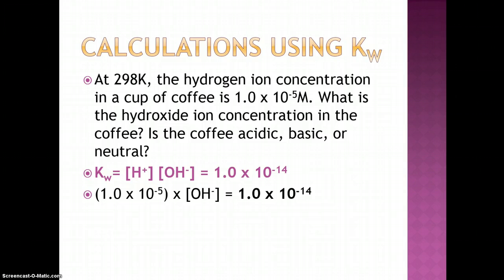...we divide both sides of the equation by 1.0 times 10 to the negative 5th and are able to calculate that hydroxide ion concentration is 1.0 times 10 to the negative 9th molar. Now comparing the hydrogen to hydroxide ion concentration, the hydrogen ion concentration is greater and therefore our coffee is an acidic solution.